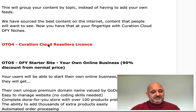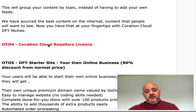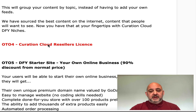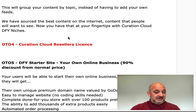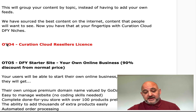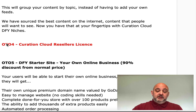OTO4 is $97 — that's the reseller's license. You don't need this if you purchase through my link because you've got the white label. The white label is offered on the back end as an upsell at $147, with a $50 discount coupon for the first few people, but it covers everything the reseller's license does and more. It allows you to white label, not just resell. So there's no reason to buy OTO4 — getting my bonus will save you $97 and the $147 for the white label.